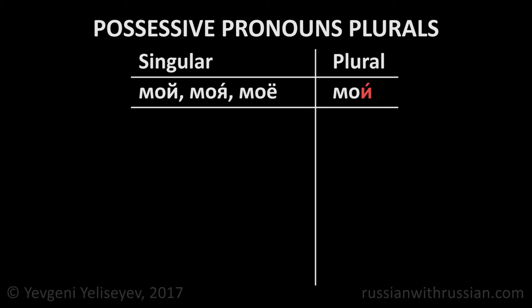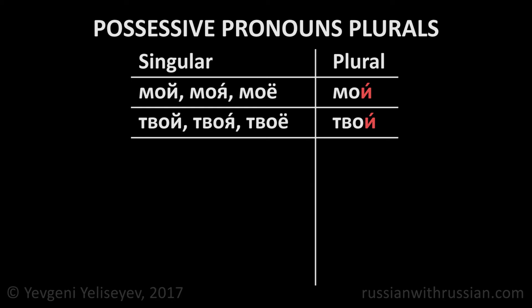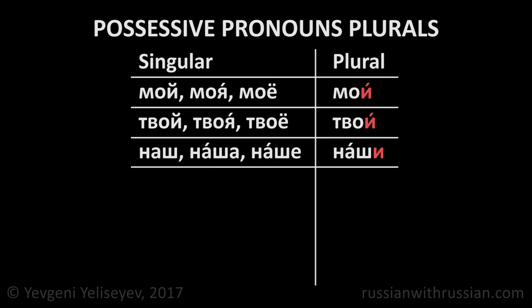The plural form for твой, твоя, and твоё is твои. The plural for наш, наша, and наше is наши. And the plural for ваш, ваша, and ваше is ваши.